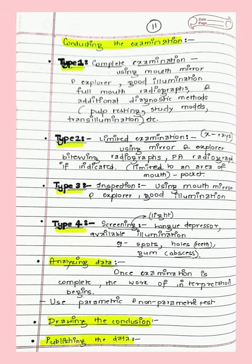There are four types of examination. Type 1 — complete examination: uses mouth mirrors, explorers, and diagnostic aids like radiographs, bite testing, and transillumination. Type 2 — limited: limited to a particular area using mouth mirror, explorer, and radiographs. Type 3 — inspection: uses mouth mirror, explorer, and illumination. Type 4 — screening: uses a light, tongue depressor, and illumination, especially for diagnosis of spots, lesions, caries, or gum abscesses.